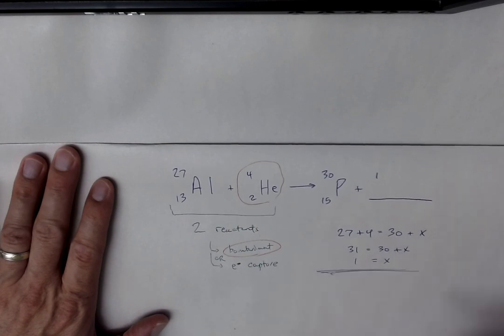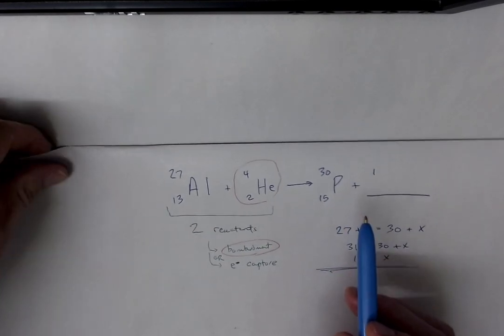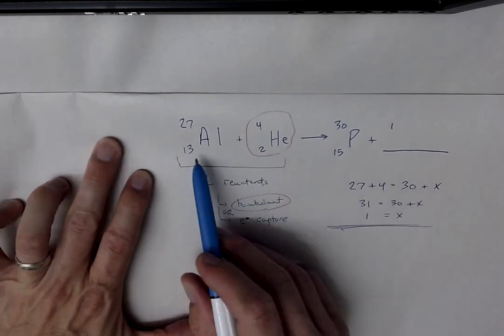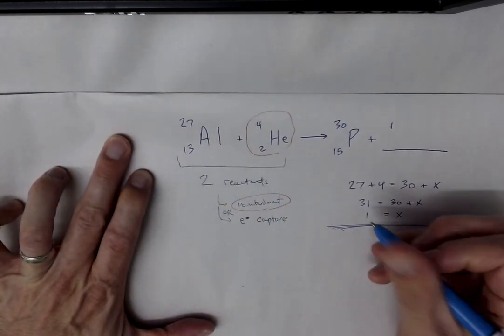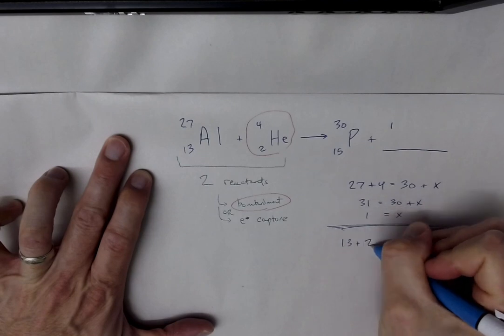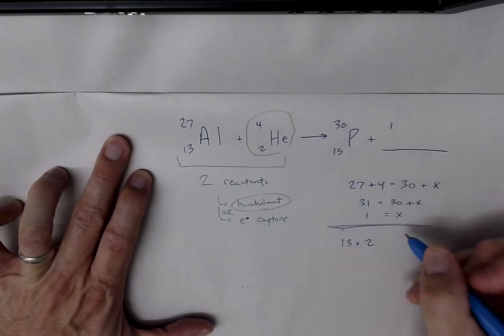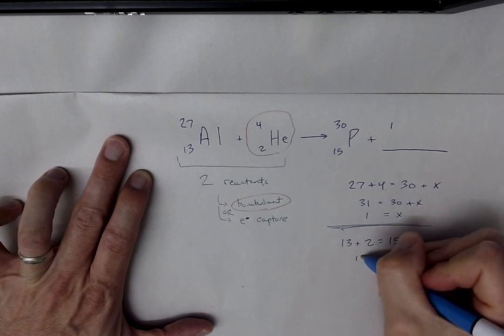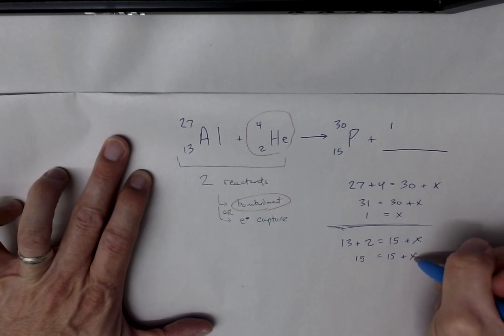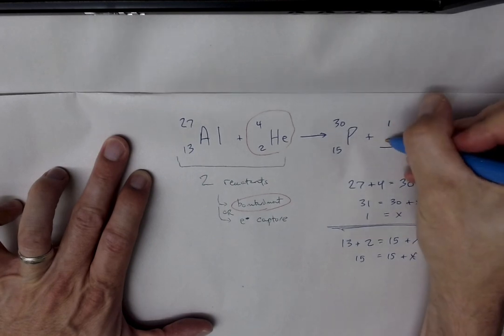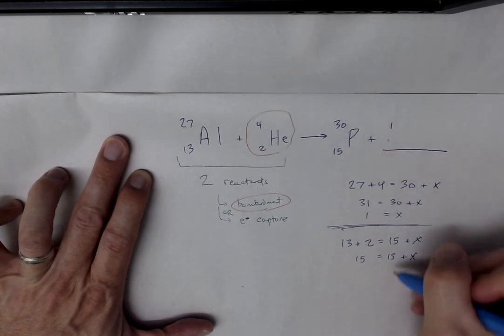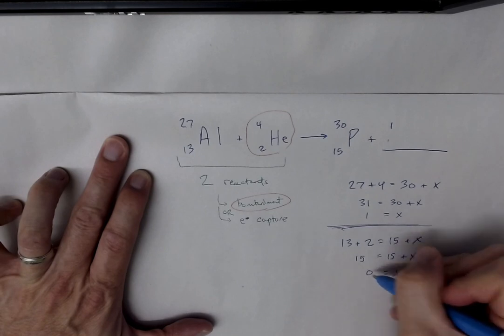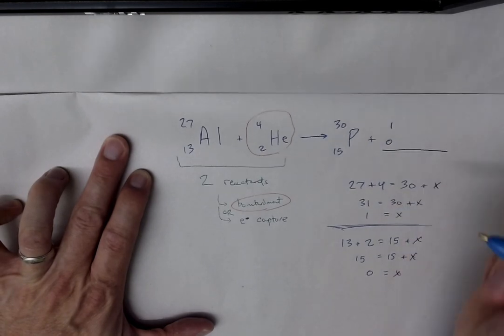Now, I want to do the same idea, but conservation of atomic number. So I have 13 plus 2 equals 15 plus x. Well, this is 15 equals 15 plus x, and so that is x equals 0.